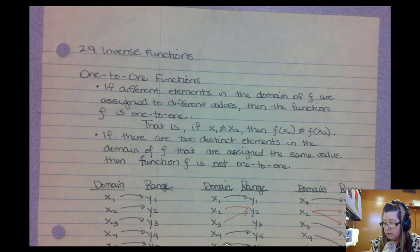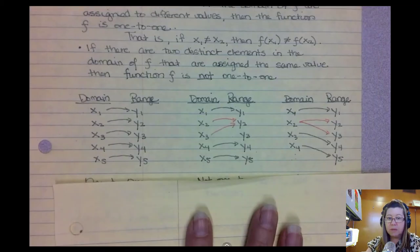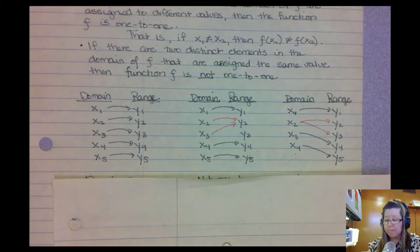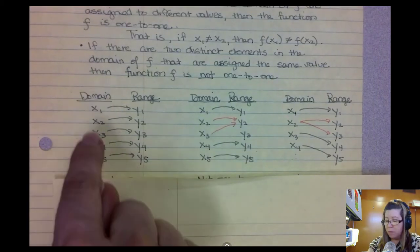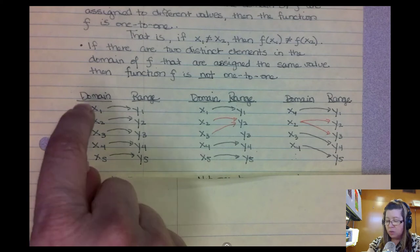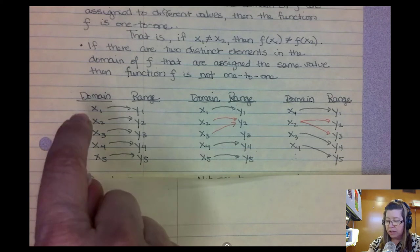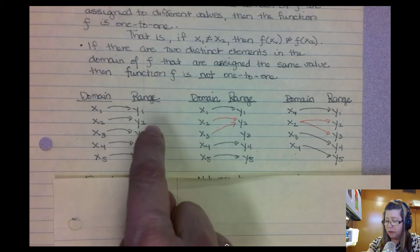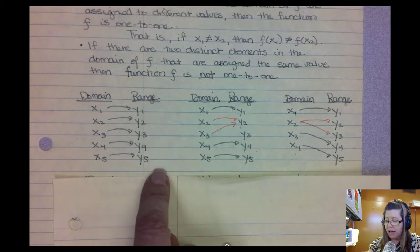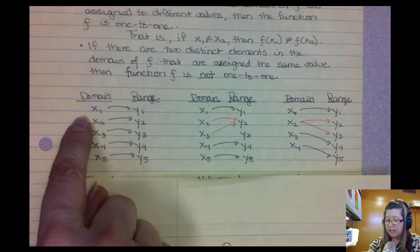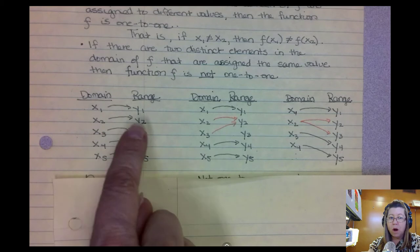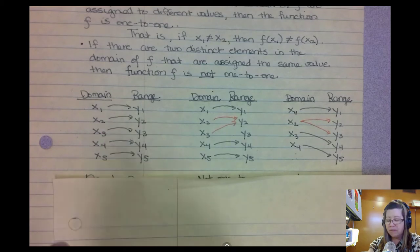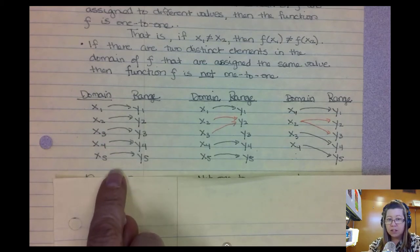Let's look at that in picture format. The domain of our function has x1, x2, x3, x4, x5, and the range is y1, y2, y3, y4, y5 — and every single x goes to a separate y. If that's the case, then this is a one-to-one function.